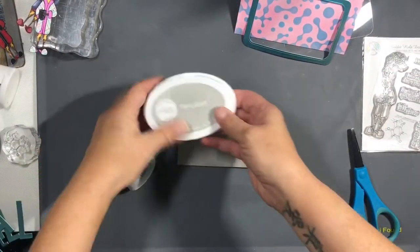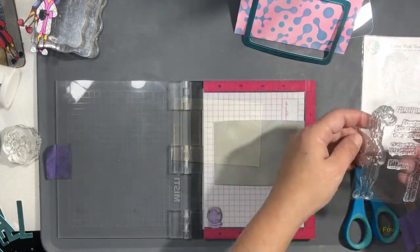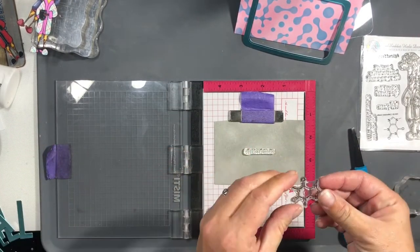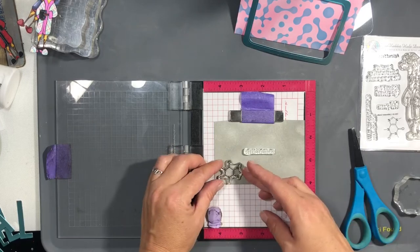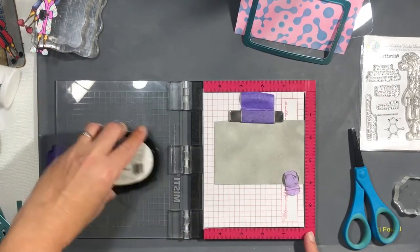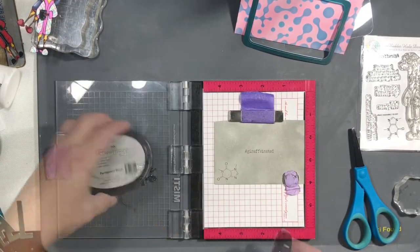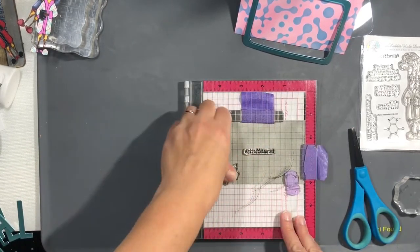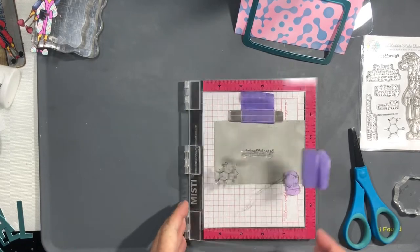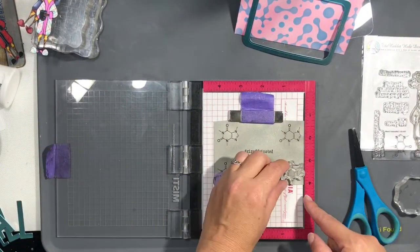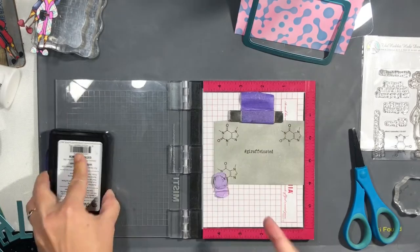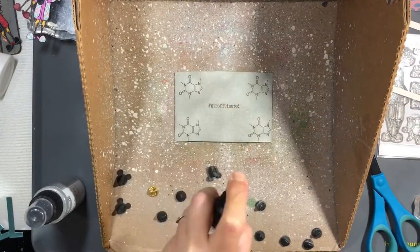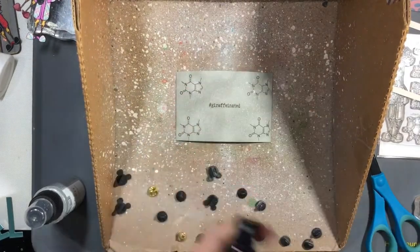I just showed you there that I cut out a rounded rectangle frame with some Hero Arts Infinity dies. Now I've already ink blended this smaller panel with Twilight by Catherine Pooler, and we're going to use a sentiment hashtag Giraffinated in the center there, and then the little chemical compound, I think that's called, for coffee. We stamped that in the four corners. This card is going to be mainly, it's not going to be a main shaker card, it's just going to have a little shaker card in the center of it.